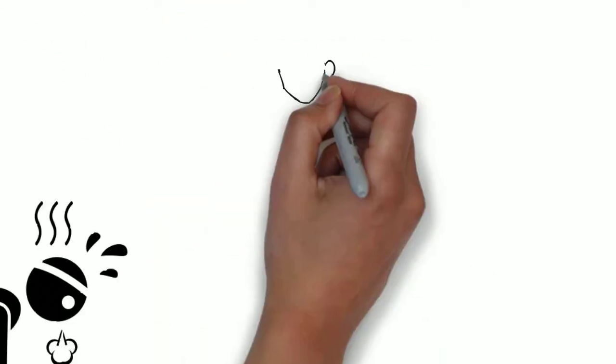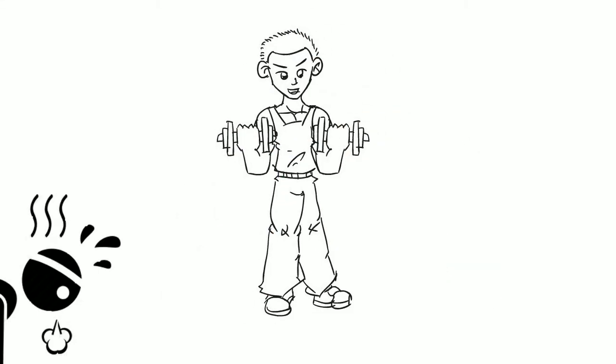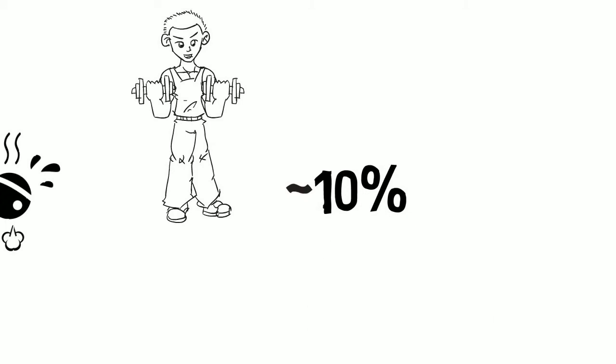The only technique that could work for lowering your breathalyzer reading is to hyperventilate. A study found that hyperventilating and vigorous exercise did indeed lower a subject's BAC reading by as much as 10%.